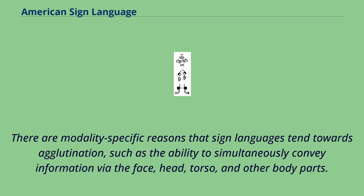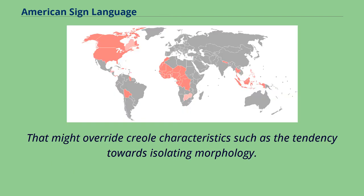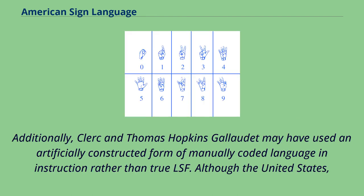There are modality-specific reasons that sign languages tend towards agglutination, such as the ability to simultaneously convey information via the face, head, torso, and other body parts. That might override creole characteristics such as the tendency towards isolating morphology. Additionally, Clerc and Thomas Hopkins-Gallaudet may have used an artificially constructed form of manually coded language and instruction rather than true LSF.